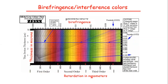From this interference color chart, we can estimate the retardation of a mineral in thin section on the basis of its interference color. In other words, we can also estimate the birefringence of any mineral in thin section from this color chart.